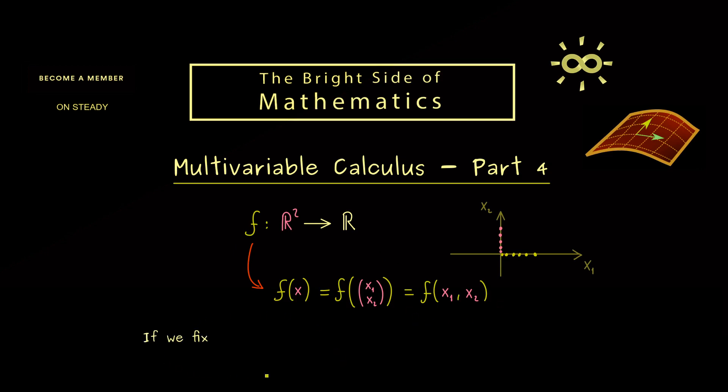In fact, if we consider partial derivatives, this notation here is the most used one. Moreover, one simplification we can immediately do here is that we fix one coordinate. For example, we can say that we choose a real number x₂ and put this into the function. And then what remains is just a function with one real variable x₁. So more precisely, we map x₁ to the value f(x₁, x₂), and then you should see this is just an ordinary function from ℝ to ℝ.